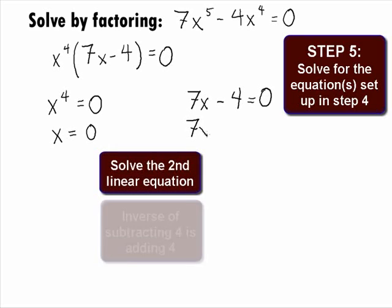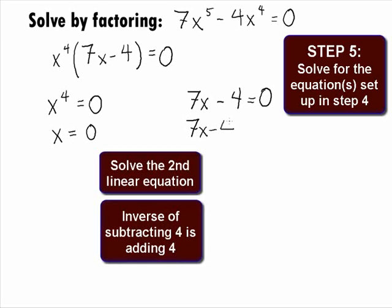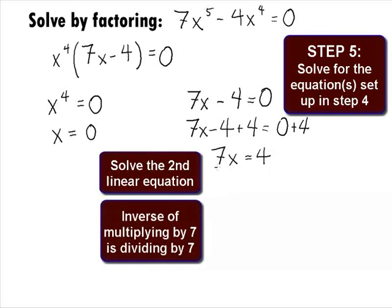Looking at 7x minus 4 equals 0, the inverse of subtract is to add 4 to both sides. So we'll get 7x minus 4 plus 4 equals 0 plus 4, which will simplify to be 7x equals 4. And the inverse of multiply is to divide both sides by 7. So we'll have 7x over 7 equals 4 over 7, and this will simplify to be x equals 4 over 7.